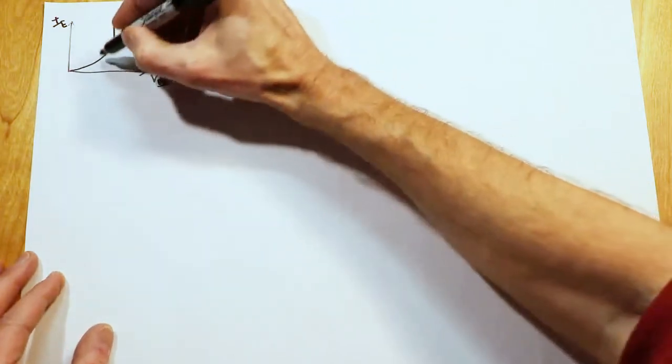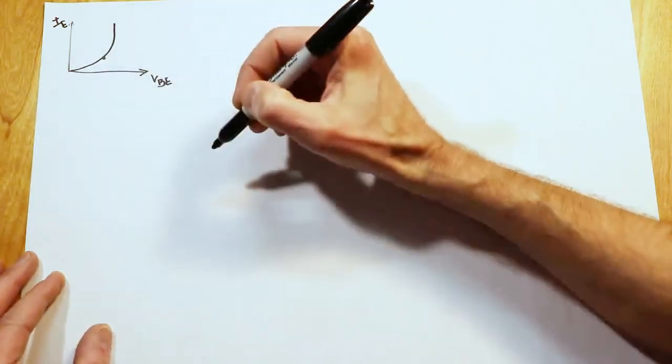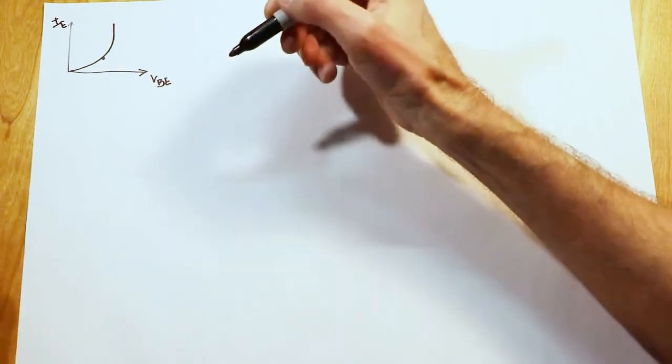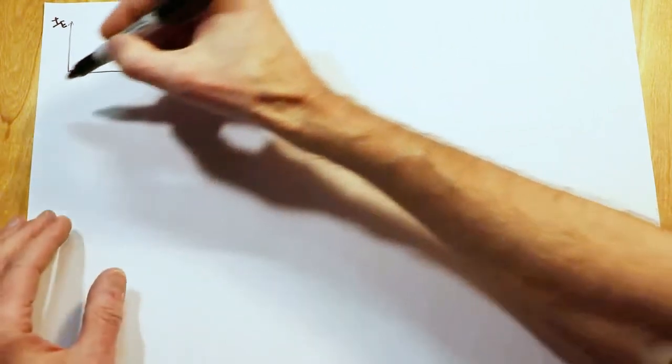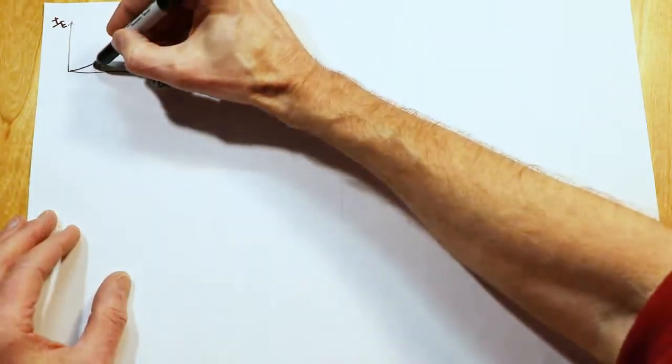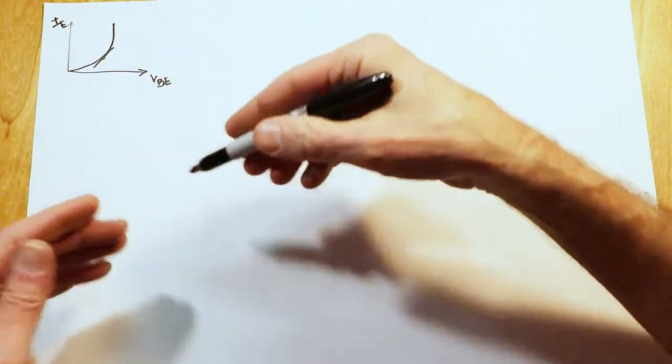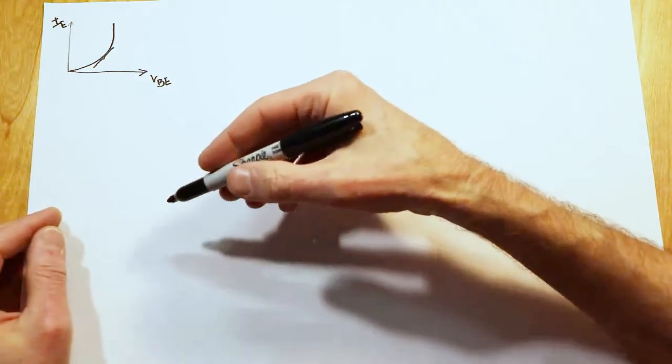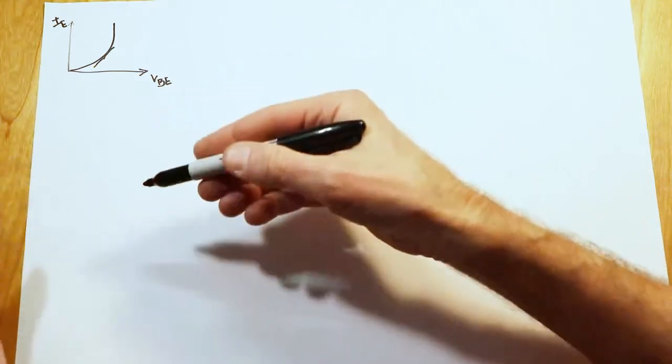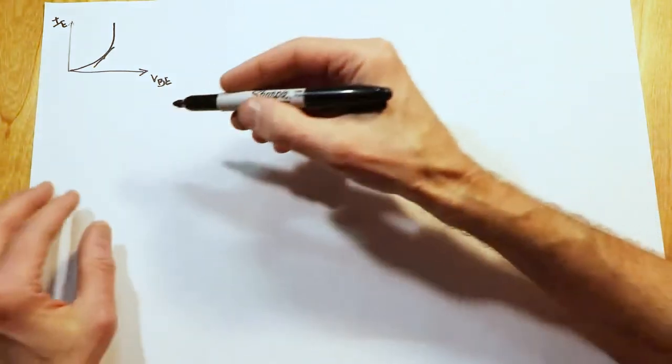Now we bias this at some point, let's just say right here. The R'E is essentially the slope of a line tangent to this point. And that little R'E, as we've seen in the text, helps us determine what the gain is. The smaller the R'E is, the bigger the gain is.